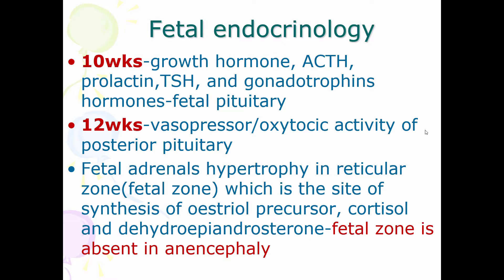By 12 weeks, the posterior pituitary hormones, which are synthesized in the hypothalamus and collected in the posterior pituitary, are usually seen. The fetal adrenals hypertrophy in the fetal zone — a specific zone not seen in adults. This fetal zone is the site of synthesis of estradiol precursor, cortisol, and dehydroepiandrosterone.